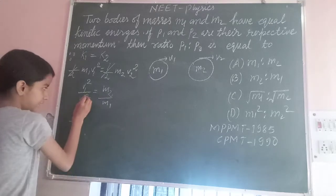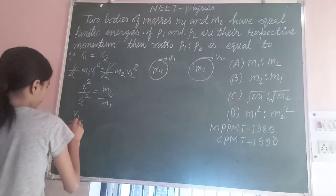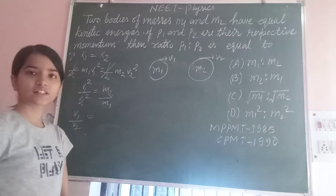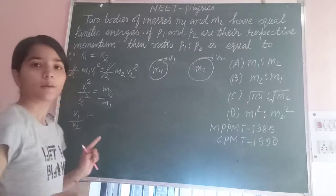Now, we will take this square as under root. So, V1 upon V2 is equal to under root M2 upon M1.